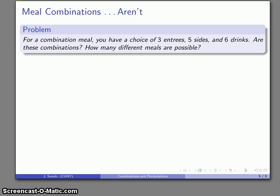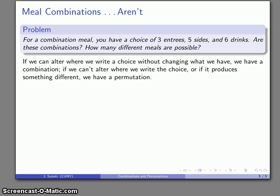How about those meal combinations? For a combination meal, I've chosen three entrees, five sides, and six drinks. First off, are these combinations, and how many different meals are actually possible? Again, our principle here is if I can alter where we write a choice without changing what it is, what we're looking at is a combination; otherwise we're dealing with a permutation.